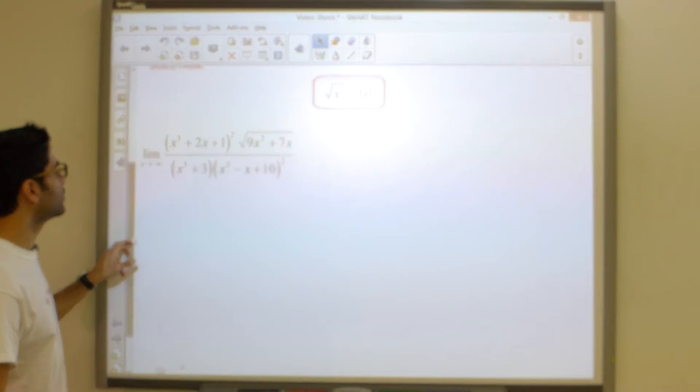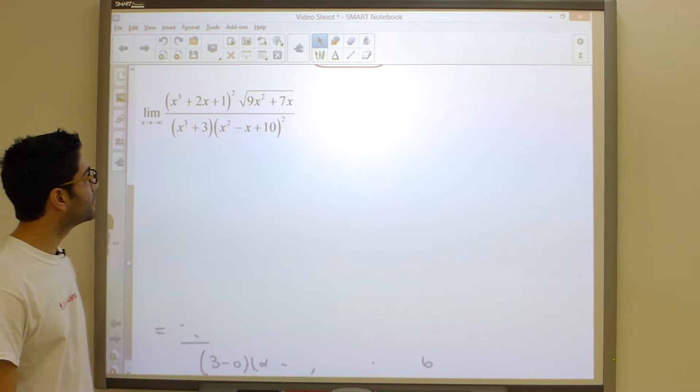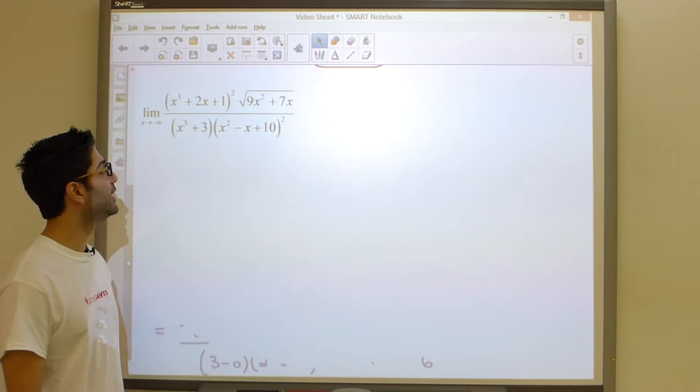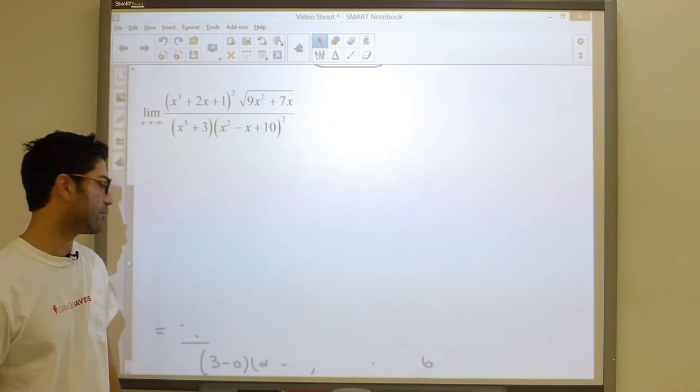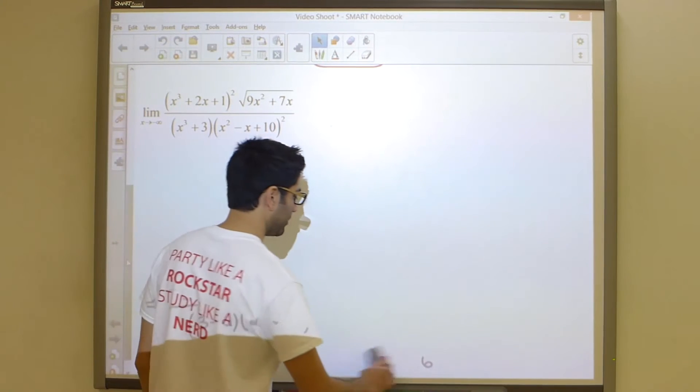And once we plug that in, our answer should reveal itself. So let's put this in play. Let's get this question up. So here's our question, and the first thing we're going to do, like I said, is to factor out the highest power of x in each one of these four terms. Take a look at how this can be done.